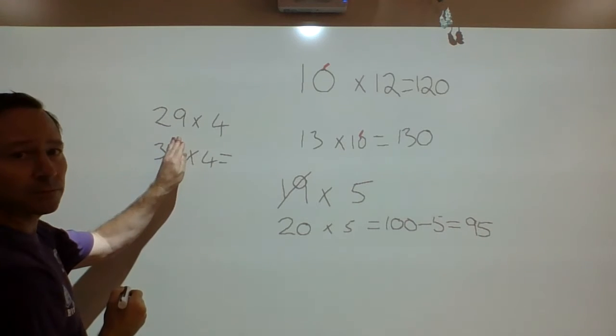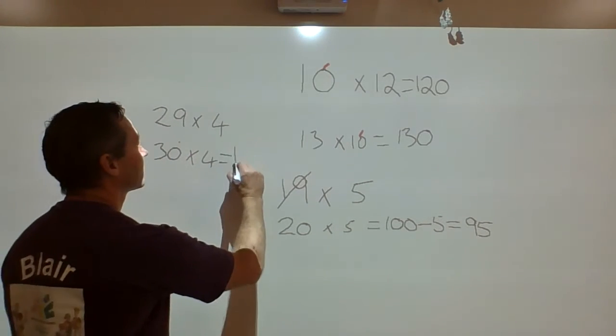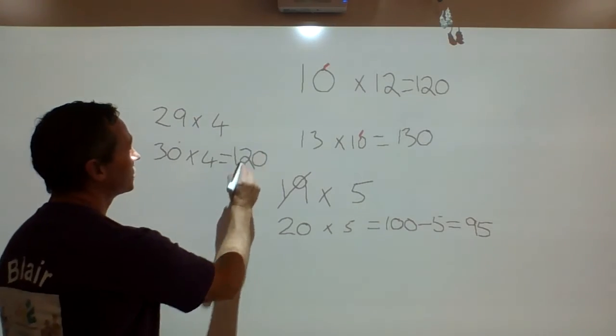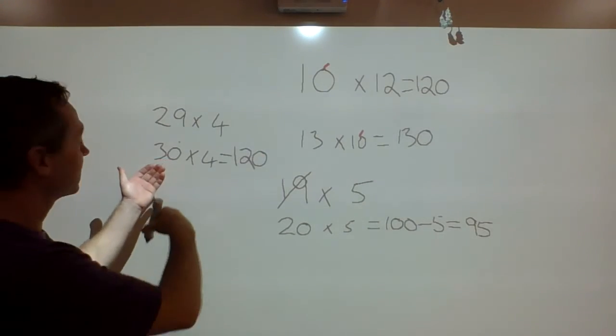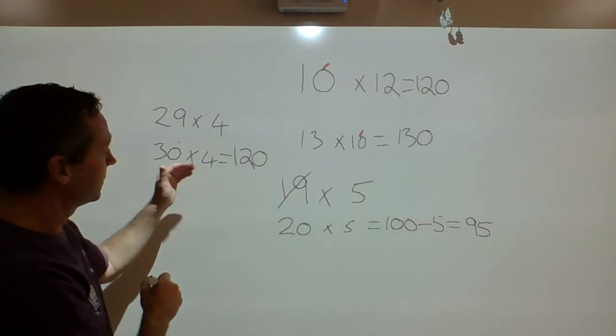30 times 4. If I cover up that zero, 4 times 3 or 3 times 4 is 12. I put a zero on the end because I'm doing multiplication of 30 times 4, not 3 times 4. So 120.